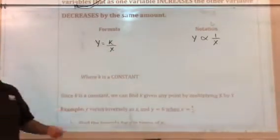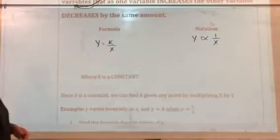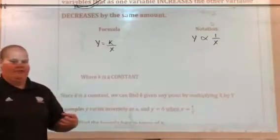k is a constant value, just like it was with direct variation. So k is a never-changing amount.